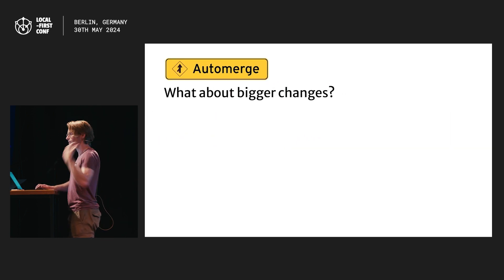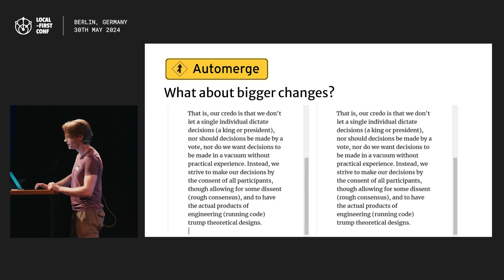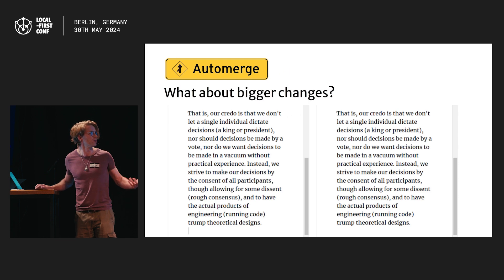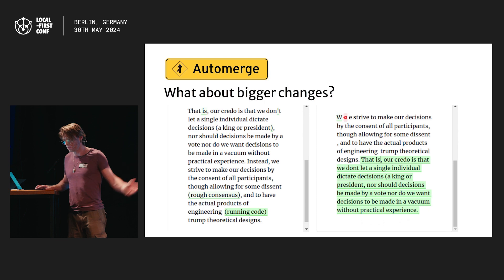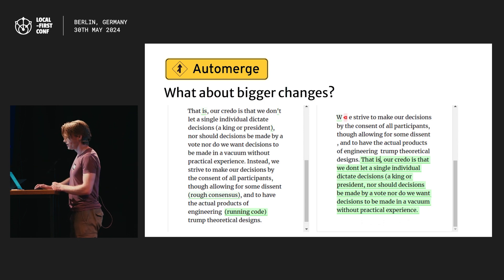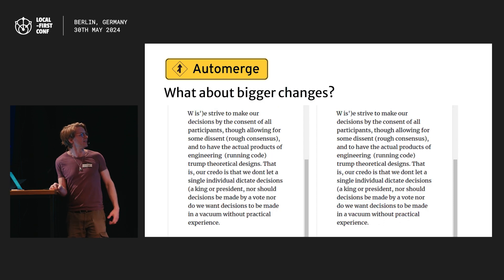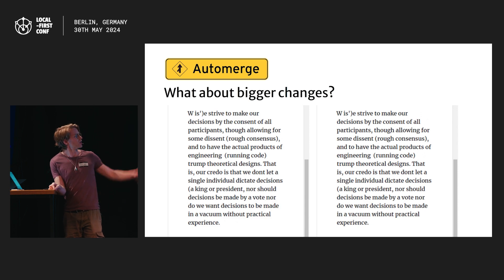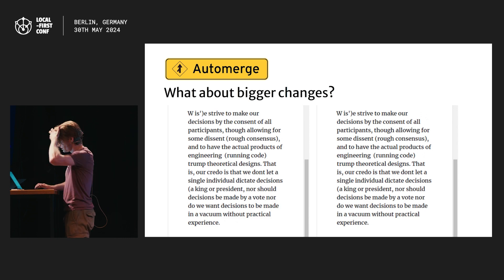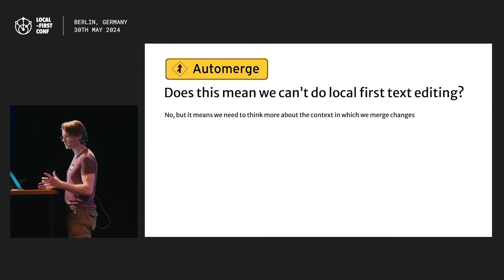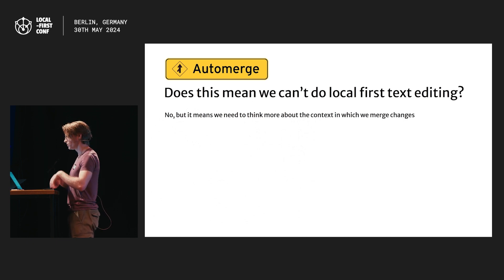These are really easy examples. What about something a bit more challenging? We're editing the second paragraph of my favourite RFC. The editor on the left has done a bunch of small copy edits — they've added 'this is', an apostrophe, some things in parentheses. And the editor on the right has completely restructured the paragraph. How do we think we should merge this? Well, it probably shouldn't look like this, which is what Automerge does. We've kind of lost all of our copy edits. There are a couple of random weird characters at the beginning. So does this mean we can't do local-first text editing? I don't think it does, but it does mean we need to think more about the context we can merge changes in.